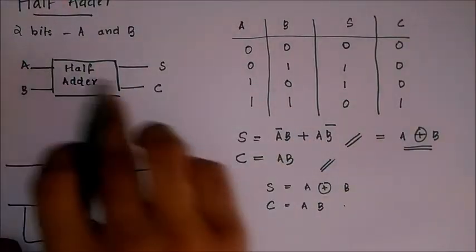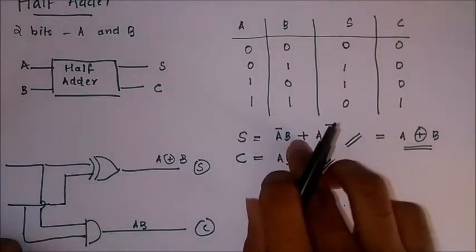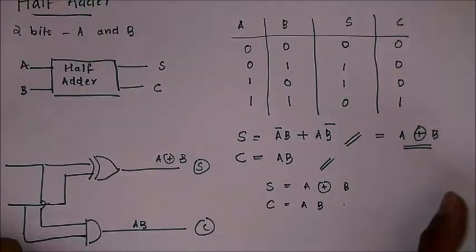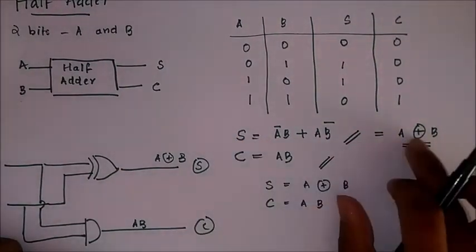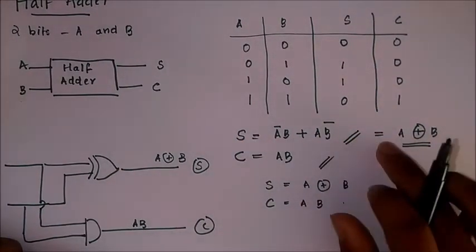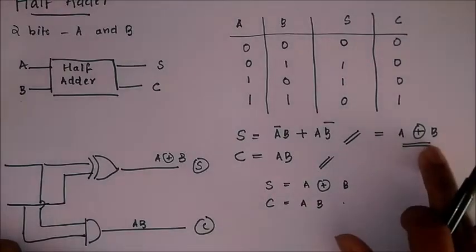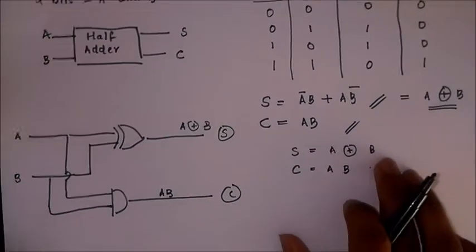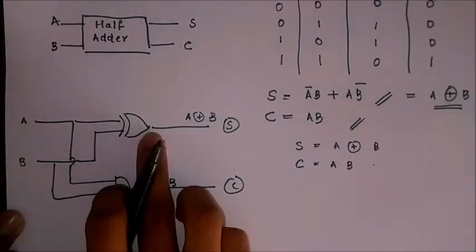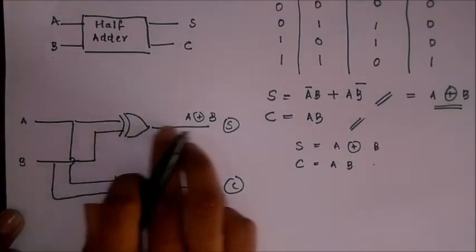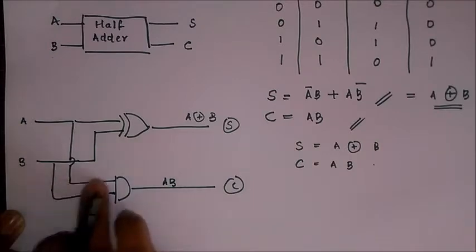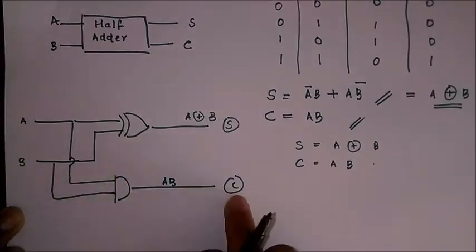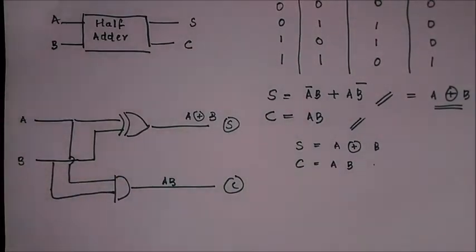Depending on the variables A and B given as input, sum we get A bar B plus A B bar, which is equivalent to an XOR gate, and carry we get A B, which is equivalent to an AND gate. So on realizing the circuit, A and B are given to an XOR gate to get the sum and to an AND gate to get the carry. So this is all about half adder.